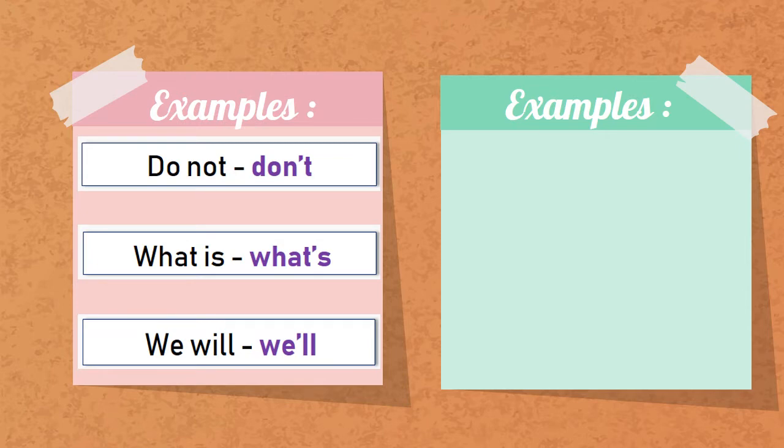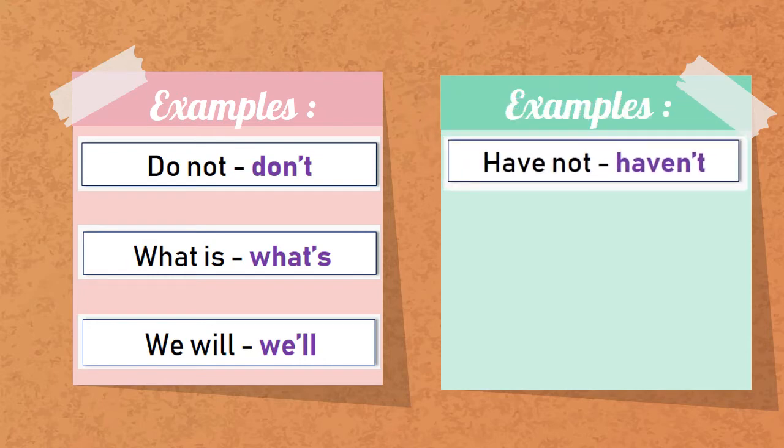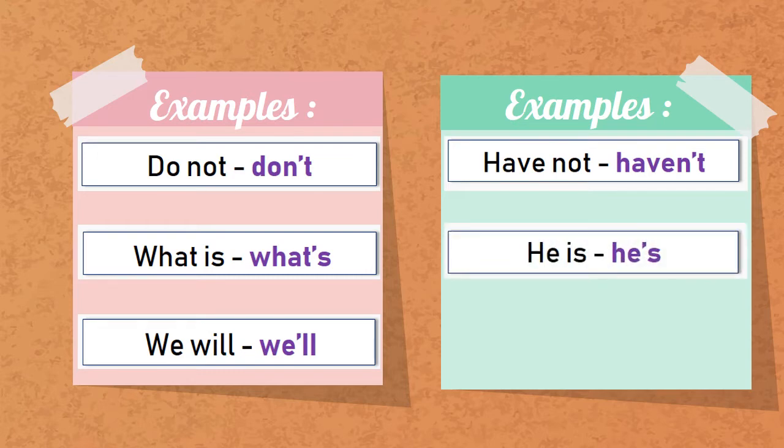We will—we remove the distance from we and will, and we are removing W and I, and we are putting an apostrophe. Have not—haven't. We are removing the distance from have and not, and we are removing O, and we are putting an apostrophe in place of O. Haven't, he is, I am. So these are the examples.